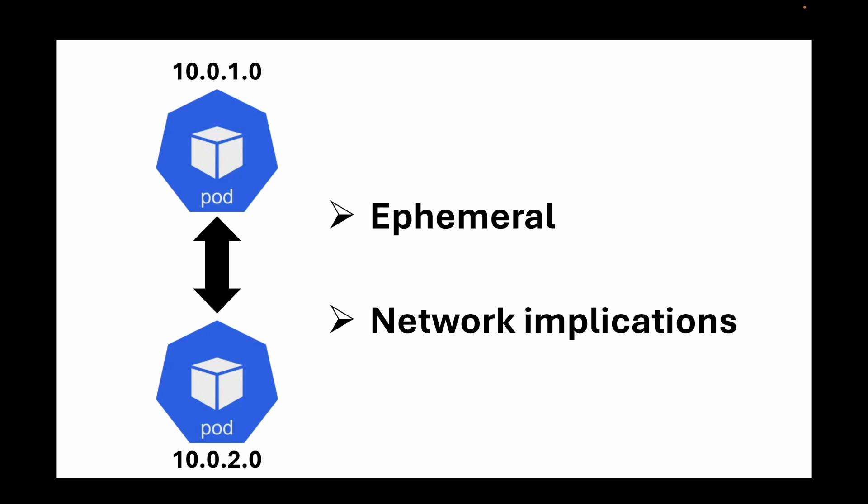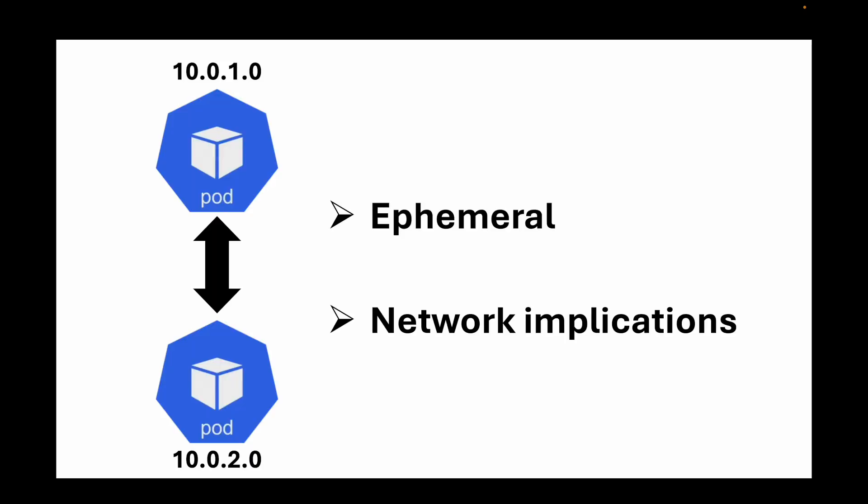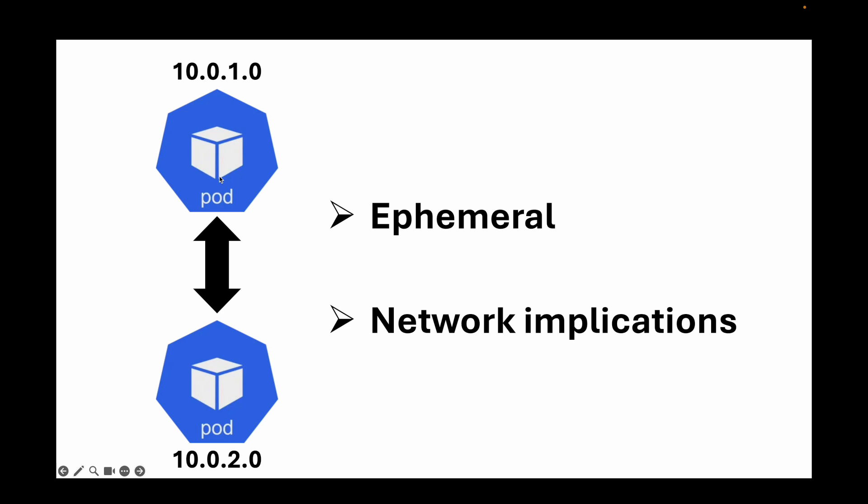If you are sending traffic directly to the pods, that's going to be a recipe for instability. We are not supposed to send traffic directly to the pods because the IPs assigned to your pods can keep changing. For example, if we have created a deployment and a pod goes down and a new pod is created, the IP will change and you won't be able to access that pod using the old IP.